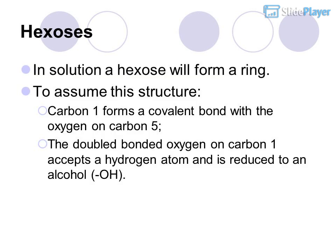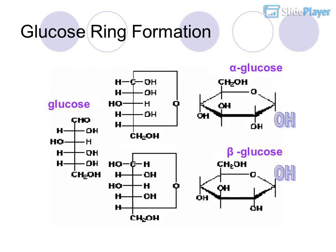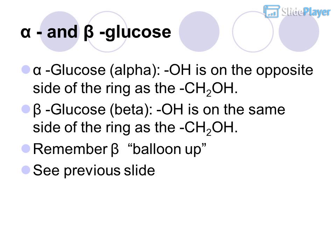Hexoses in solution form a ring. To assume this structure, carbon 1 forms a covalent bond with the oxygen on carbon 5. The double-bonded oxygen on carbon 1 accepts a hydrogen atom and is reduced to an alcohol. In alpha glucose, the O at carbon 1 is on the opposite side of the ring as the CH2O group. In beta glucose, the O is on the same side. Remember: beta = balloon up.